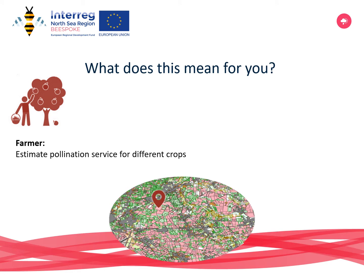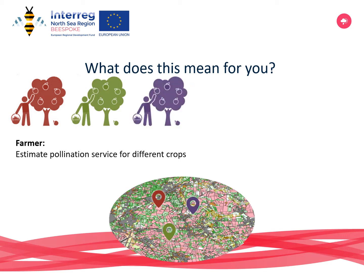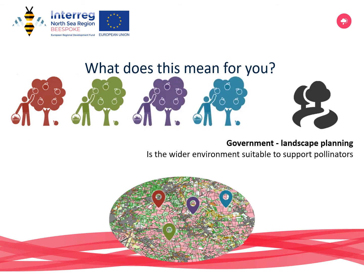What could this mean for you? For instance, for a farmer, it would be great to know the potential pollination service in your crop. But of course, in the wider environment there are multiple farmers. So on a government or cooperation level, one can start to implement landscape planning to sustain optimal pollination service on a broader scale, benefiting multiple stakeholders.